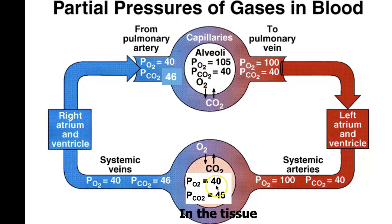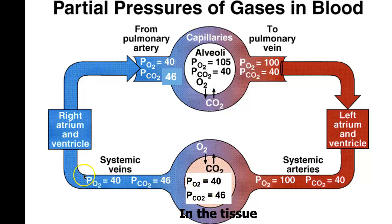Let's start here in the tissues. In the tissues we can start with our partial pressure of oxygen being 40, partial pressure of CO2 being 46. That's what's traveling then through the systemic veins. The systemic veins, then the right atrium and ventricle pump that blood, and this is what comes from the pulmonary artery into the capillaries. At the alveoli around the capillaries, now you have exchange.